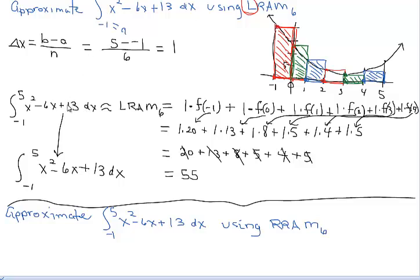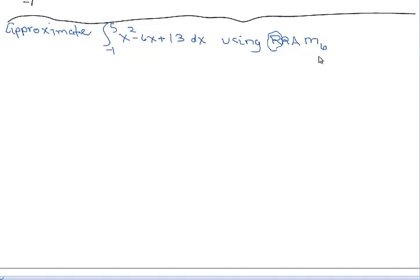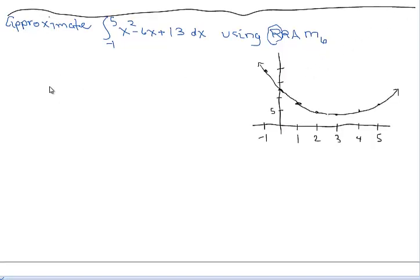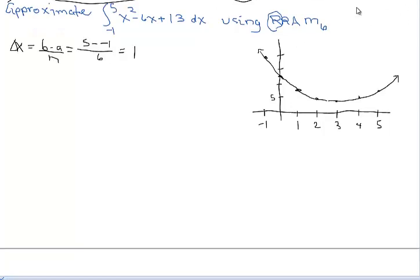Using the same example, we're going to go ahead and approximate the region using a right rectangular approximation method. As you can see, the R stands for right. Let me go ahead and get the same graph drawn here. Now that we have the graph, let's figure out how wide each of the intervals are. We're going to see that every rectangle has the same width, if we inscribe six rectangles in this horizontal space. The value of the integral can be approximated by a right RAM.